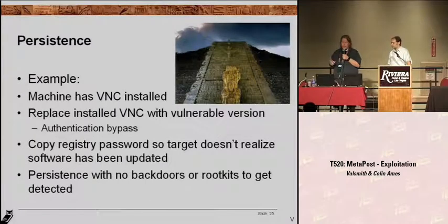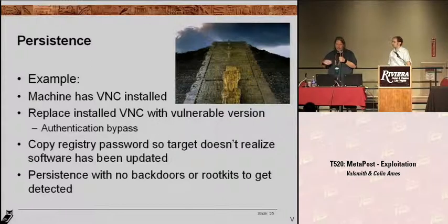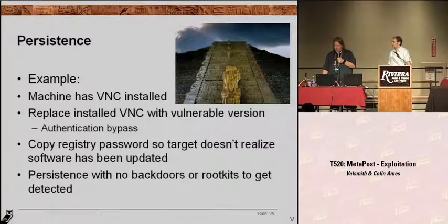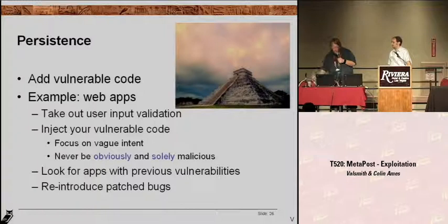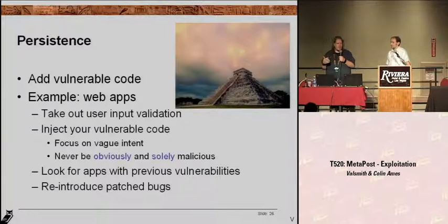Configuration management systems like CFEngine and SMS are really good to attack because they have access to every system in the network and they're pushing things out. So if you break into those and just use what's there, use what the target has left for you to use. So imagine you're going after a machine and lots of admins use VNC to remote administer their machines. You break into the computer somehow and want persistent access, but you don't want to put in a Trojan because they're likely to find it. Well, replace the existing VNC with a vulnerable version that has an exploit like authentication bypass. Make sure that you copy the password so the target doesn't realize his software has been modified.